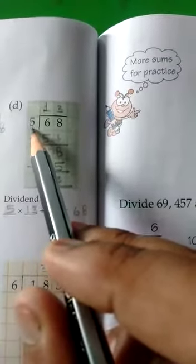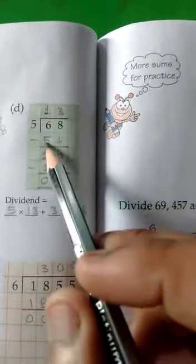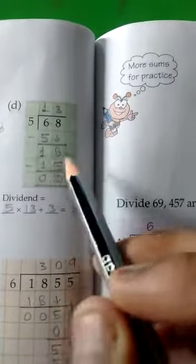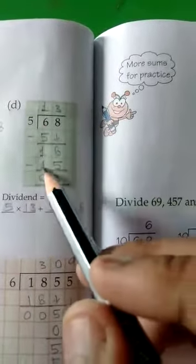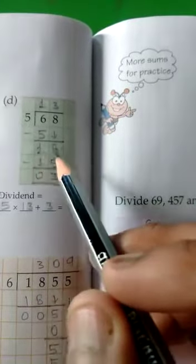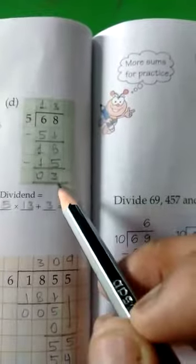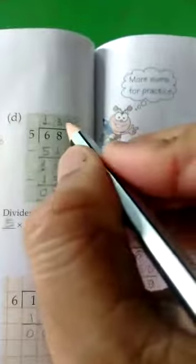Next question D: 68 divided by 5. First, 6 divided by 5. 5 times 2 is 10, which is greater than 6. And 5 times 1 is 5, which is smaller. So write 1 in the quotient and 5 here. 6 minus 5 is equal to 1. Bring down 8, so it will be 18. 18 divided by 5: 5 times 3 is 15, which is smaller, and 5 times 4 is 20, which is greater than 18. So write 15 here and quotient 3 here. 18 minus 15: 8 minus 5 is 3, and 1 minus 1 is 0. So the remainder is 3 and quotient is 13.